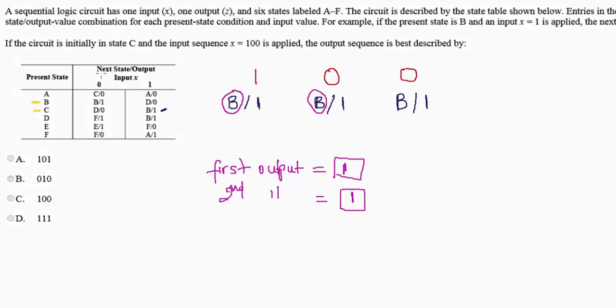So my output, again, next state slash output. So B is my next state. My output is one. So my third output is equal to one.